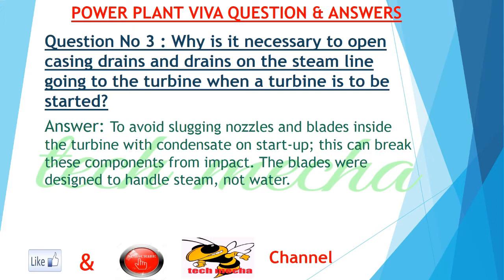Question number 3: Why is it necessary to open casing drains and drains on the steam line going to the turbine when a turbine is to be started? To avoid slugging nozzles and blades inside the turbine with condensate on startup, as this can break these components from impact. The blades were designed to handle steam, not water.